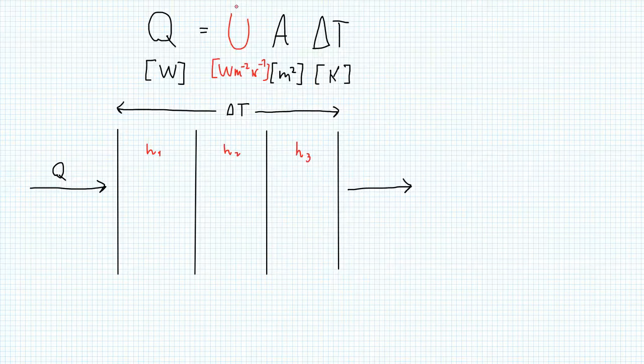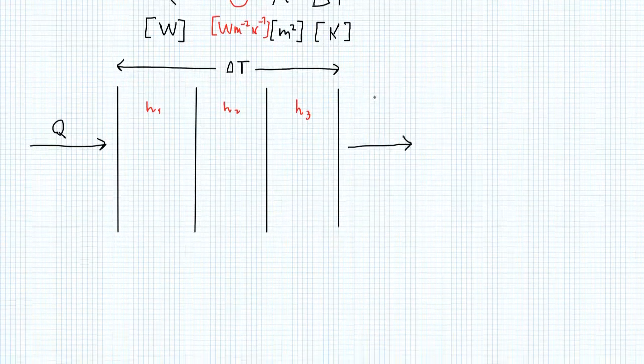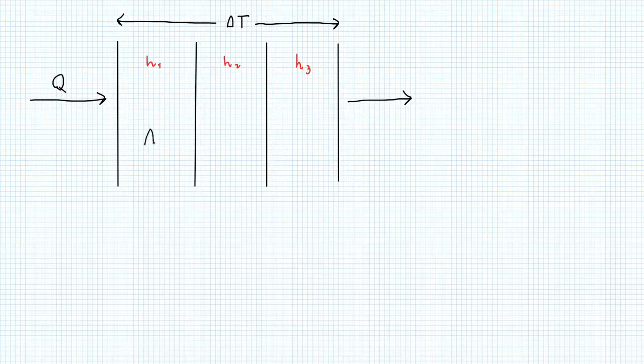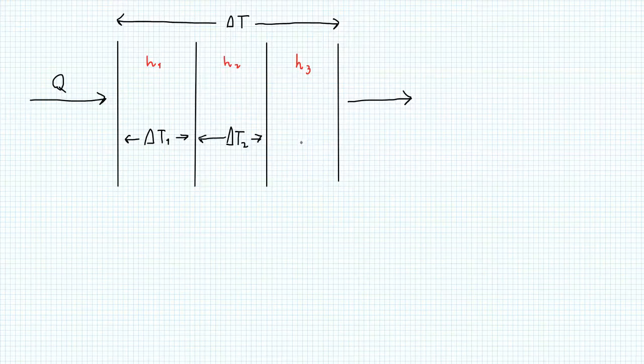Each layer is a different medium with its own individual heat transfer coefficient H. And this means that the overall heat transfer process with its temperature gradient can be split into three, one per layer with corresponding delta T's. Delta T1 for the first layer, delta T2 for the second layer, and delta T3 for the final layer.